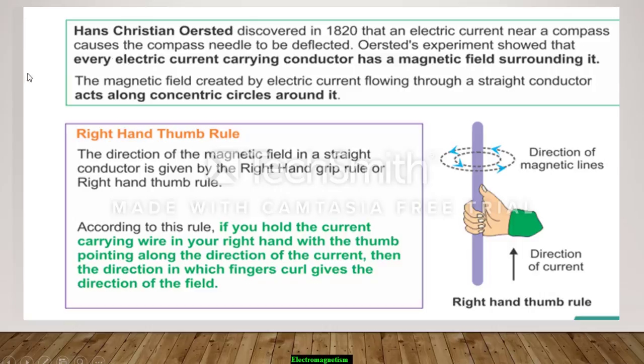So what we studied in this slide: Hans Christian Oersted experimented and studied that every electric current carrying conductor has a magnetic field surrounding it.